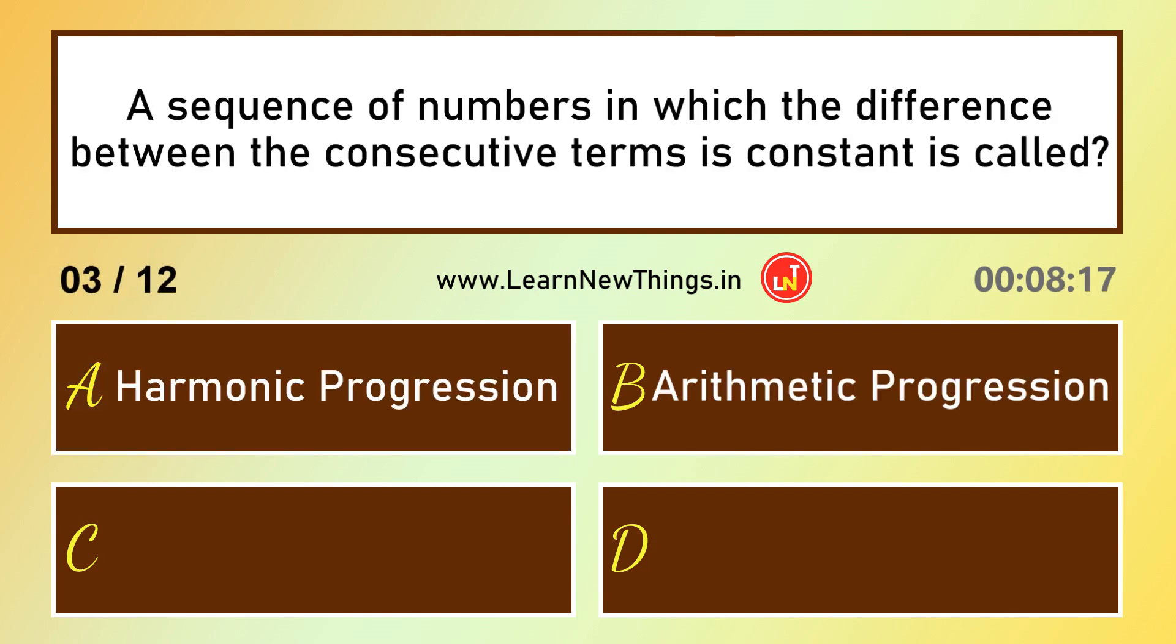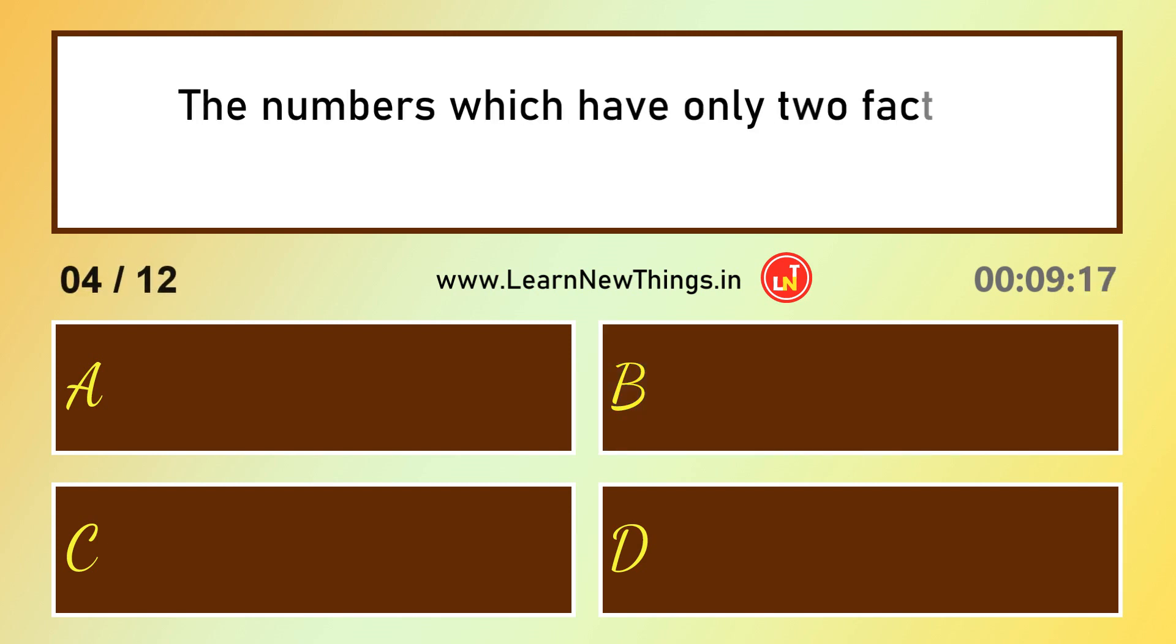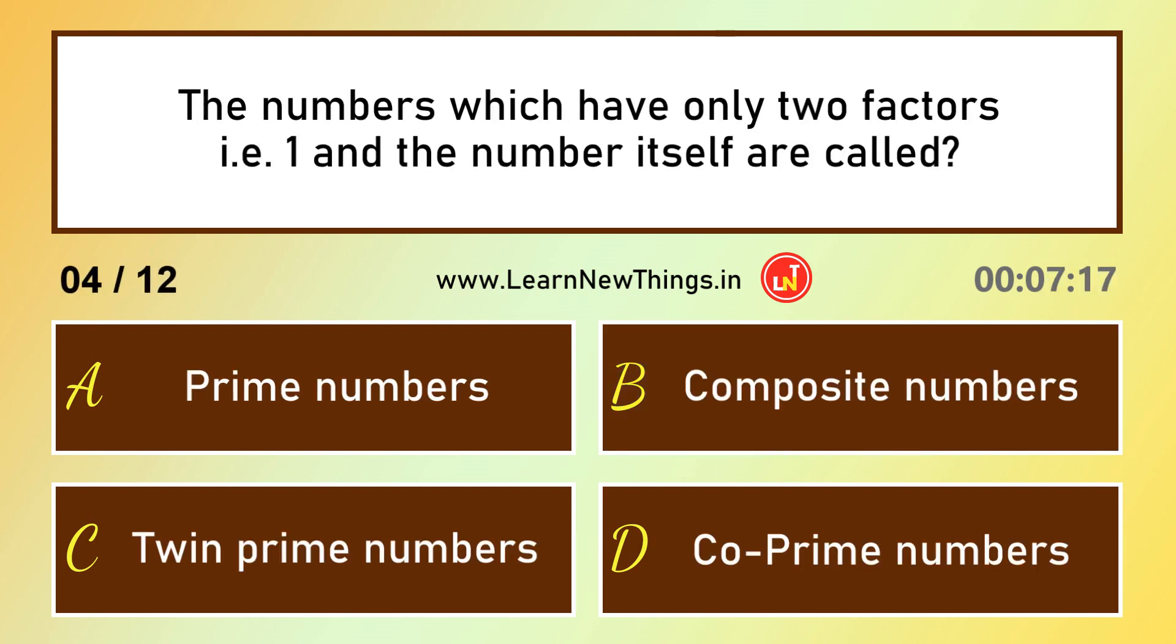A sequence of numbers in which the difference between the consecutive terms is constant is called Arithmetic progression. The numbers which have only two factors, one and the number itself, are called Prime numbers.